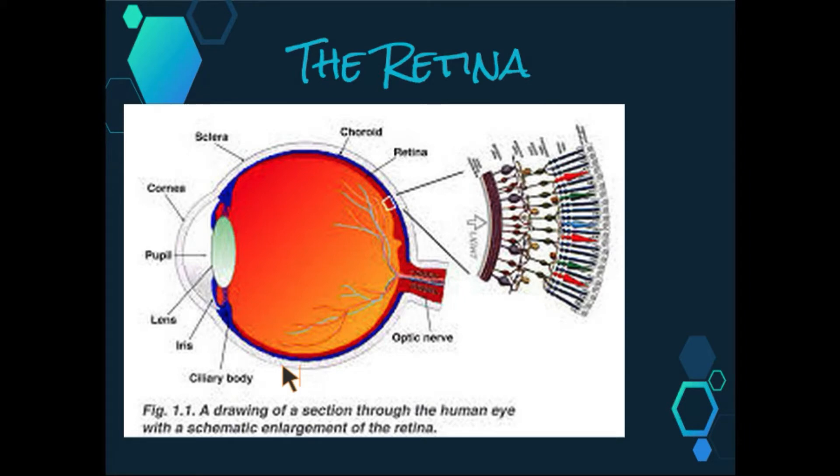Of all the nerve cells that make up the retina, only the rods and cones respond directly to light, hence the collective term photoreceptors. In humans, each retina contains approximately 125 million rods and six to seven million cones.